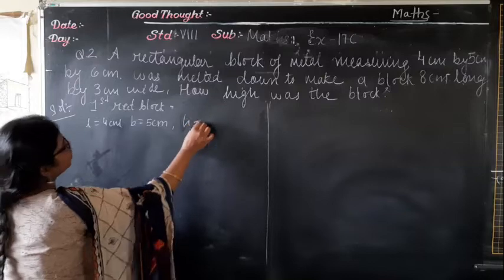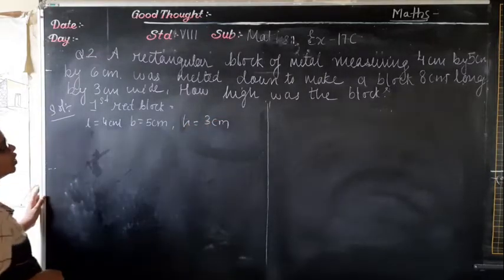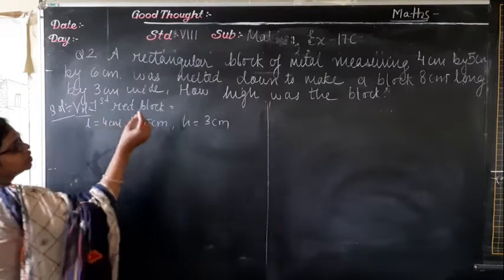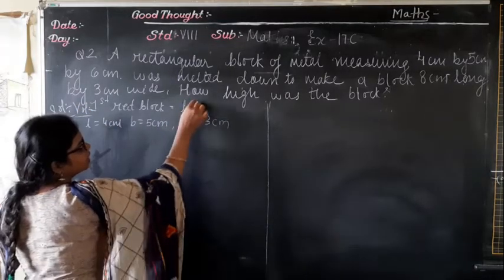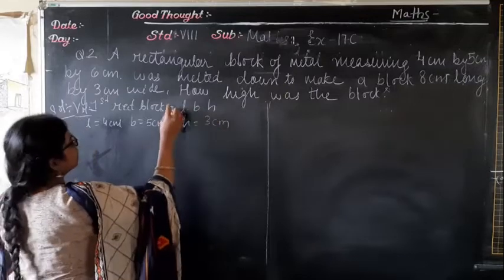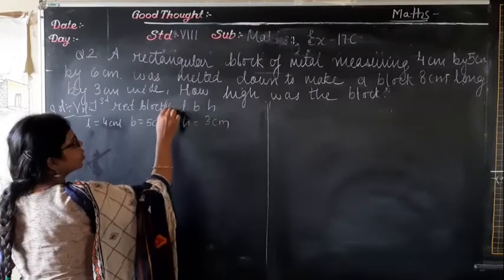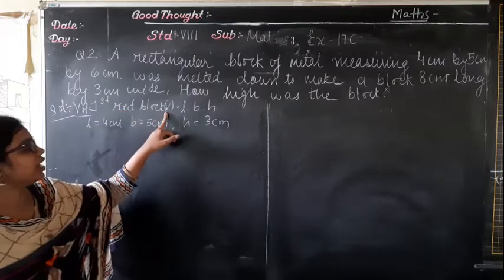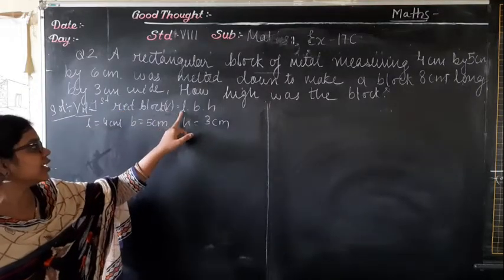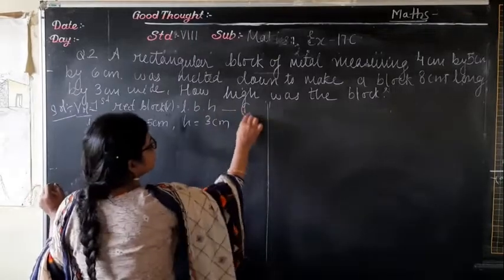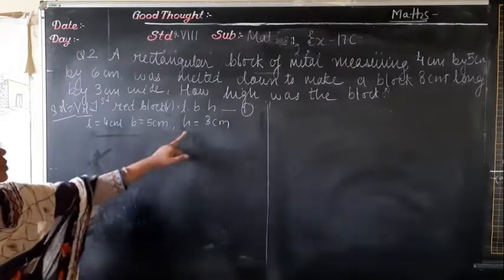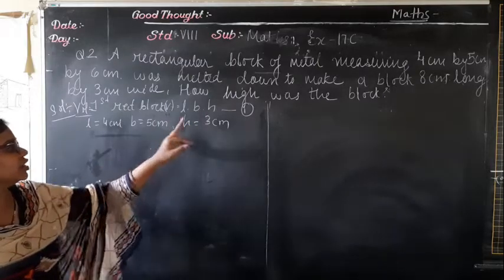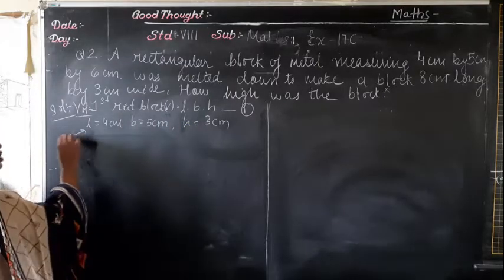And height = 6 cm. The volume of the first block will be L × B × H. So volume of first block = 4 × 5 × 6.